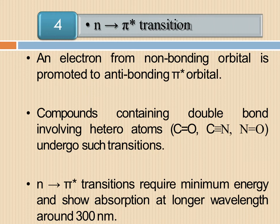The fourth is n to pi star transition, in which both types of electrons, non-bonding and pi, are present. In this transition, one electron of the lone pair of electrons is excited and reaches to pi star anti-bonding orbital. For example, compounds which have carbonyl groups show an absorption band at 279 nanometers due to n to pi star transition.